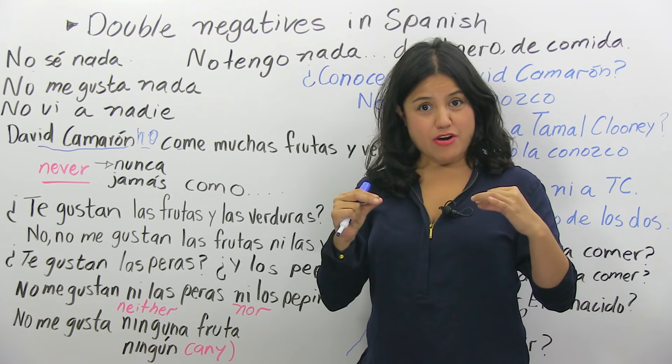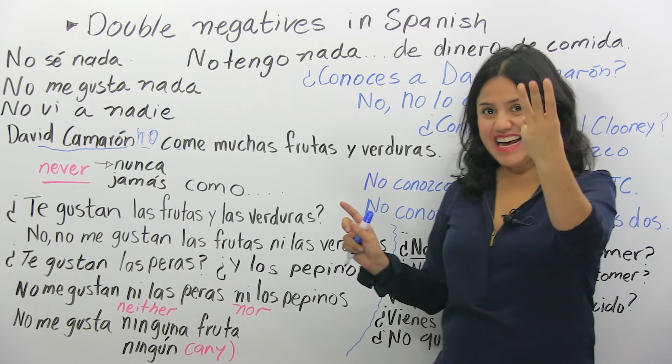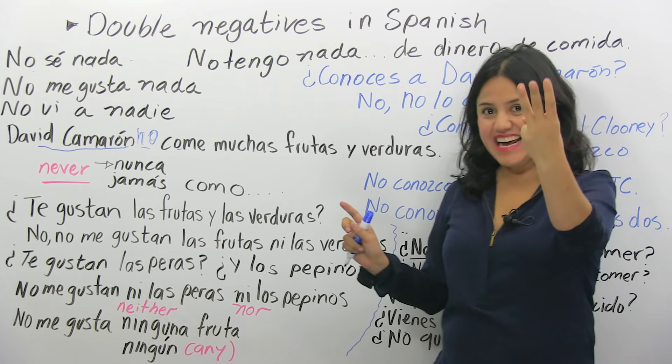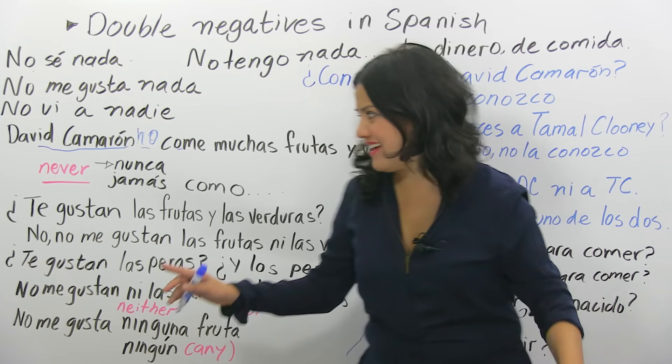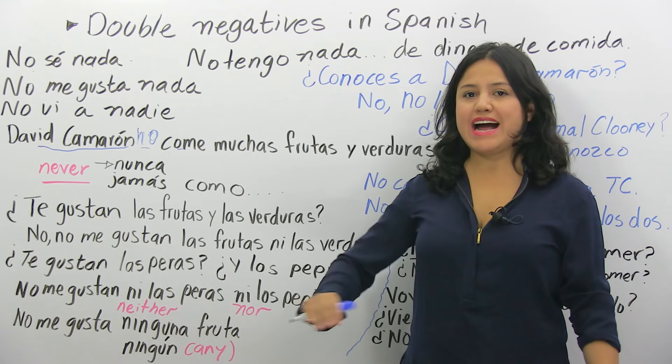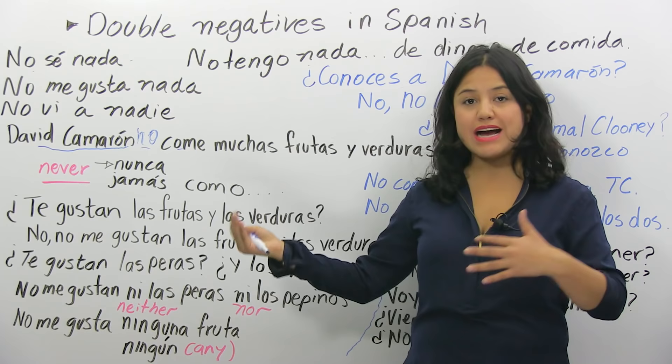Yo creo que David Camarón nunca come frutas y verduras. I gave you three ways to make it negative: no come, jamás come, and nunca come. Jamás and nunca both mean never. You can say no, nunca, or jamás — depende qué tan dramático quieres ser.